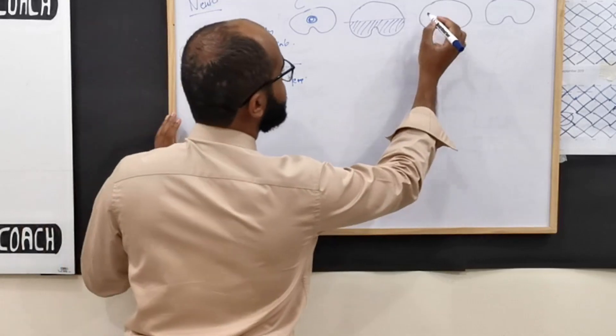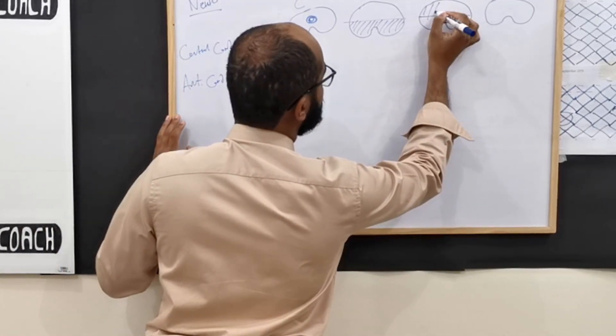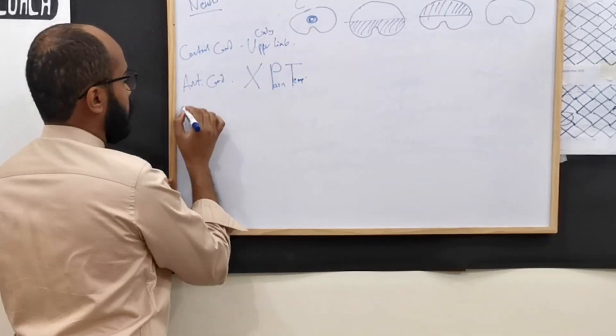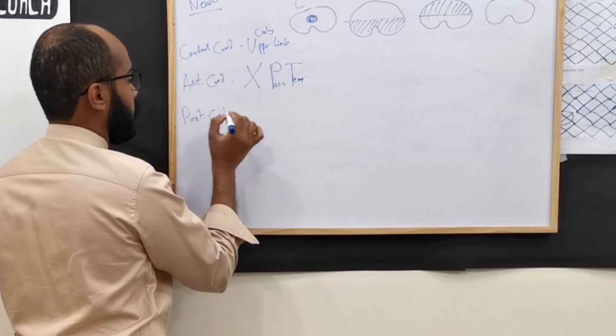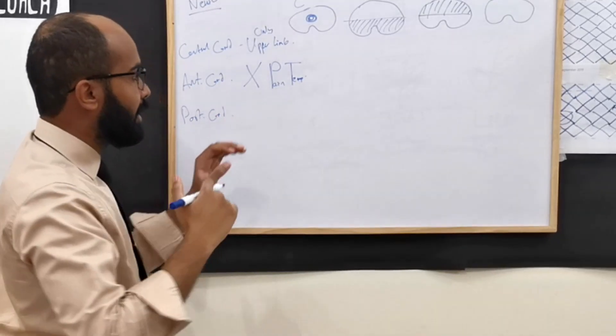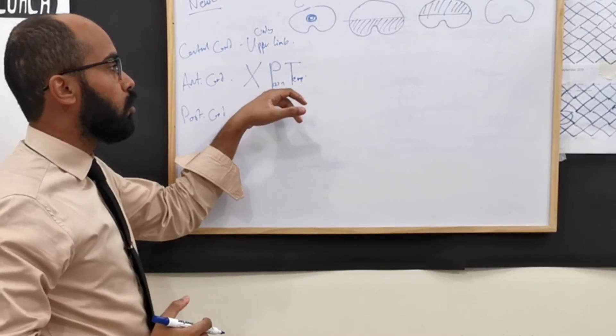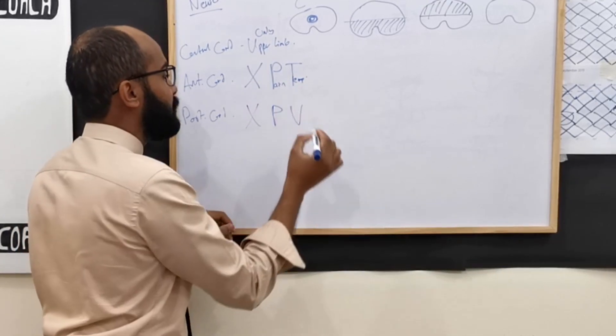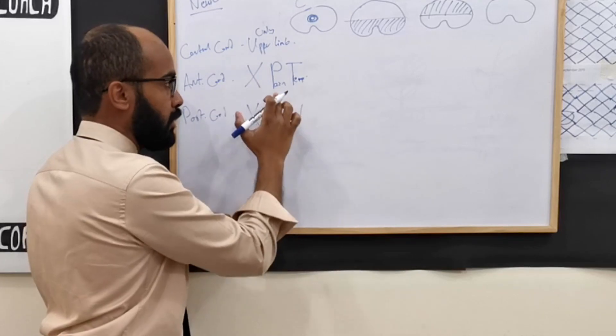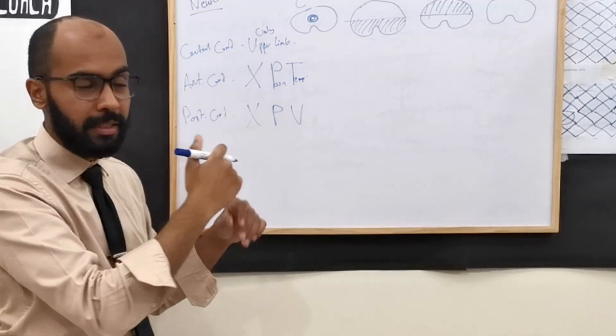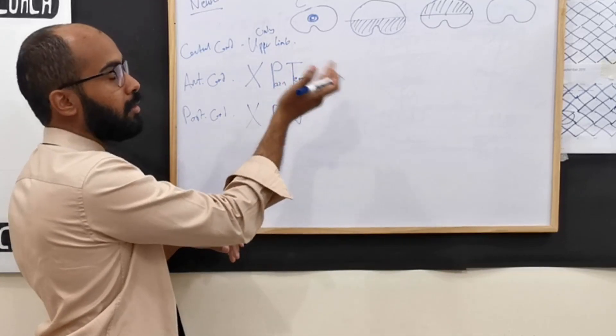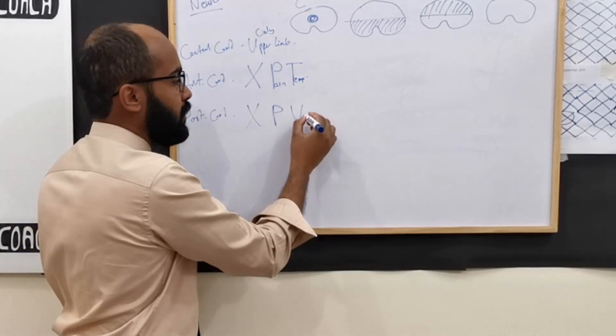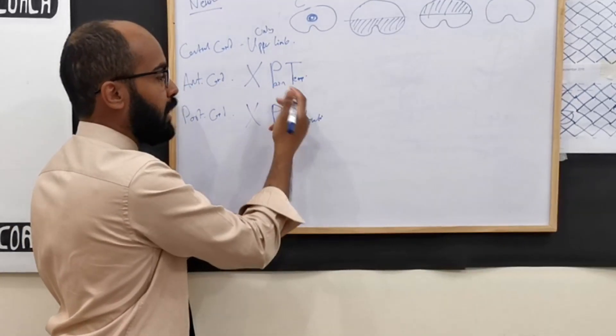Next is posterior cord syndrome or dorsal column. So it's going to be the opposite because here we said no PT, no pain temperature. Here, it's going to be no PV. Remember, because I didn't want you to get too confused between P and P, that's why we start with temperature. Temperature, hot, pain. P and T, pain and temperature. In P and V, V is vibration. And because it's not pain, it's going to be position.